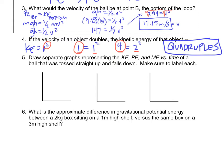Number five asks us to draw separate graphs for kinetic energy, potential energy, and mechanical energy versus time. For kinetic energy: if I toss an object into the air, it's moving fastest at the lowest point, so KE starts high, decreases to its minimum at the highest point, then increases again as it comes back down — giving a U-shaped curve.